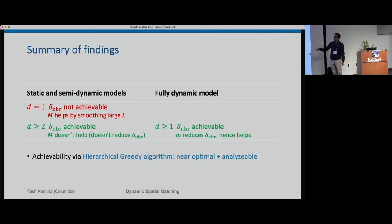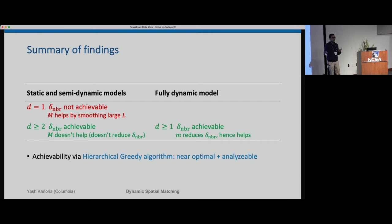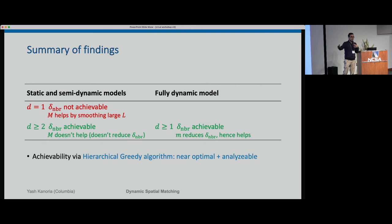In the fully dynamic model, if you have excess supply, it reduces how close your nearest neighbor is, and that itself brings down the cost — a fundamentally different mechanism than in the semi-dynamic model. A lot of the technical work was to come up with an algorithm which can actually be analyzed and then massaged to get these results, though the point is not that one should implement that exact algorithm.